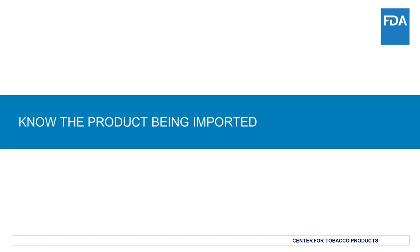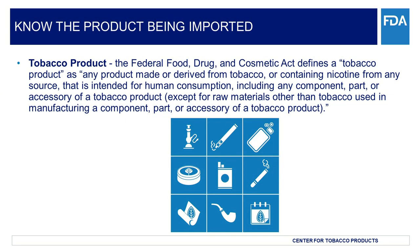Let's get started with knowing the product that is being imported into the U.S. Section 201(rr) of the Federal Food, Drug, and Cosmetic Act, or FD&C Act, defines tobacco product as any product made or derived from tobacco, or containing nicotine from any source that is intended for human consumption, including any component, part, or accessory of a tobacco product, except for raw materials other than tobacco used in tobacco products.